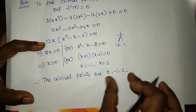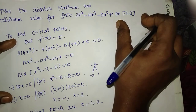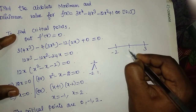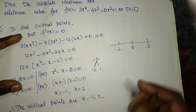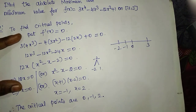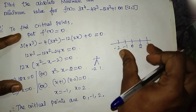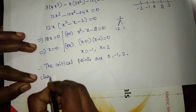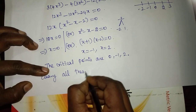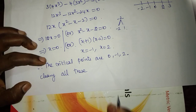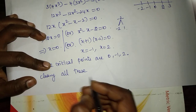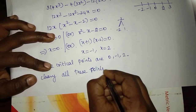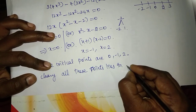From the critical points, we check which lie within the given interval [minus 2, 3]. The critical points are 0, minus 1, and 2. We check the interval: all these points — 0, minus 1, and 2 — lie within [minus 2, 3]. If any point were outside the interval, we would leave it. Clearly, all these points lie in the interval.